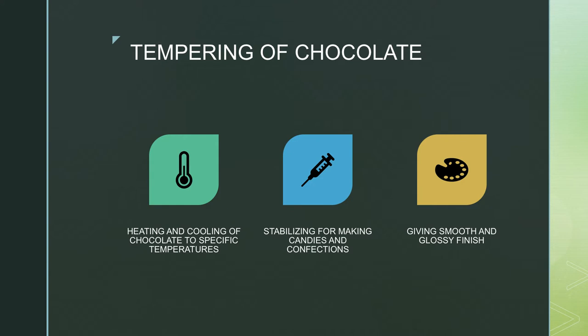Proper tempering of chocolate is done to stabilize it for making candies and confections, giving chocolate a smooth glossy finish and keeping it from easily melting on your fingers, and allowing it to set up beautifully for dipped and chocolate-covered treats. Chocolate nuts, chocolate dipped candies, and chocolate dipped strawberries are just some of the delicious goodies that have a thin rich layer of chocolate wrapped around them. The first step for pastry and candy chefs making these treats is to melt and temper chocolate.